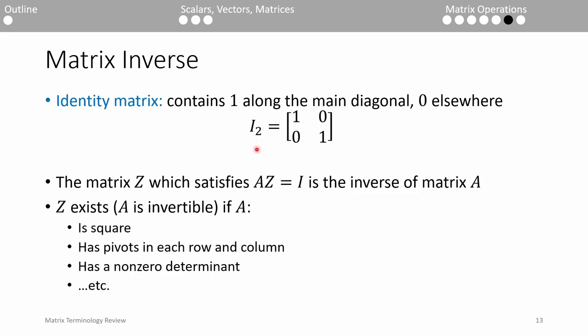The matrix Z, which satisfies AZ equals I, is the inverse of A. There are many conditions which stipulate the existence or non-existence of Z. Perhaps the easiest way to check if A is invertible is if it's square. A non-square matrix cannot be inverted. From your linear algebra class, you learned many ways to check if the inverse of A exists, so I won't go over it all here.